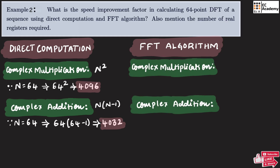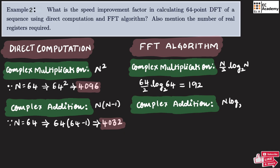Now let us find complex multiplication and complex addition for the FFT algorithm. In the fast Fourier algorithm, the complex multiplication is given as (N/2)·log₂N. Substituting n equals 64, we get (64/2)·log₂64 = 192. So 192 complex multiplications are required using the FFT algorithm for the 64-point DFT. For complex addition, we use the formula N·log₂N. Substituting n equals 64, we get 64·log₂64 = 384. So 384 complex additions are needed using the FFT algorithm.